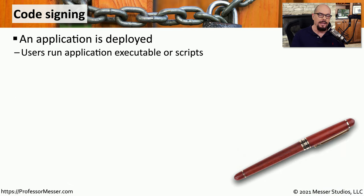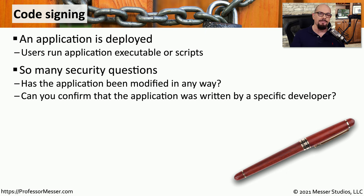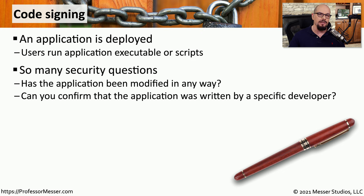When we install and run a new application on our system, there's a level of trust that it's not going to run any malicious software. We have to be aware every time we run a new application that there may be something inside we're not aware of. There's always a concern that the application may have been modified by a third party to add malicious software into the executable. It would be useful if we could confirm that the application we're running is exactly what was originally deployed by the developer.